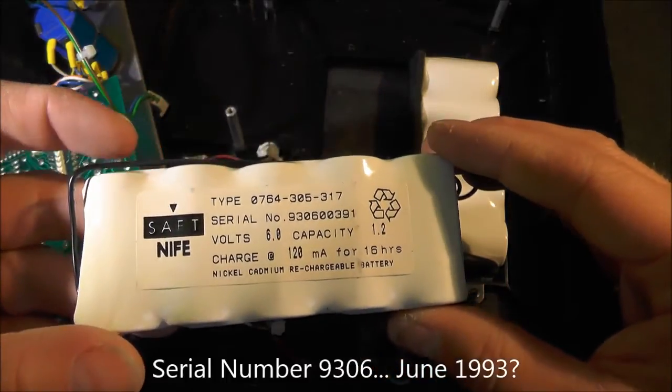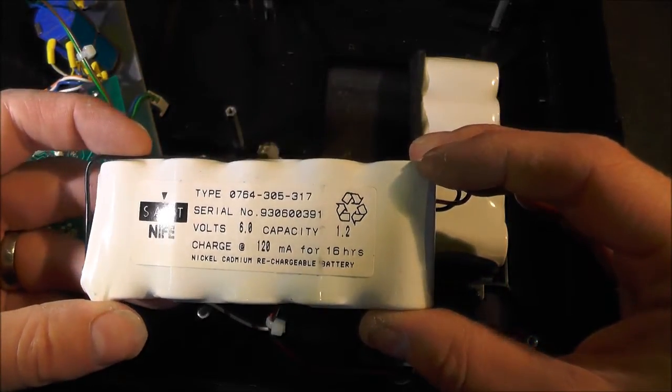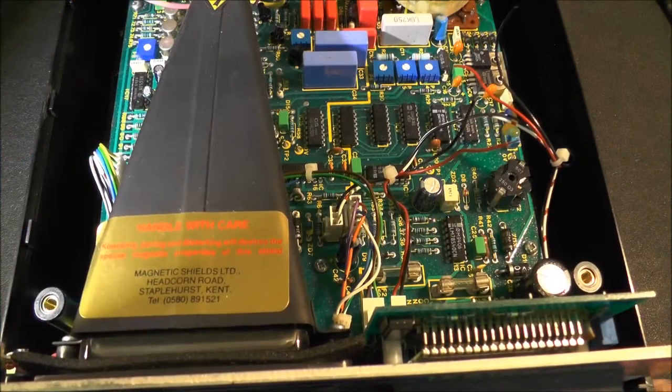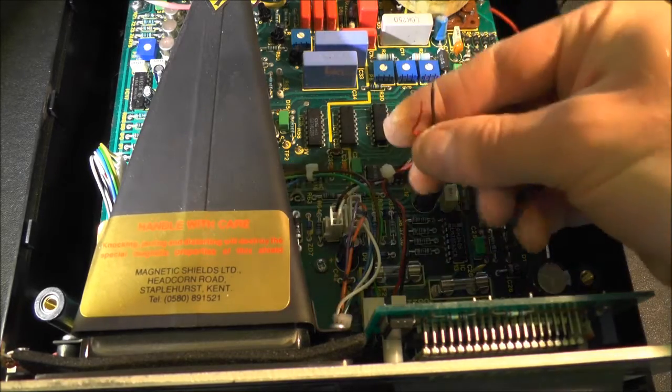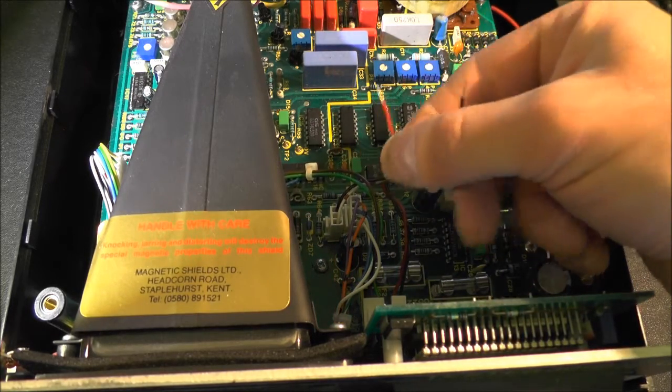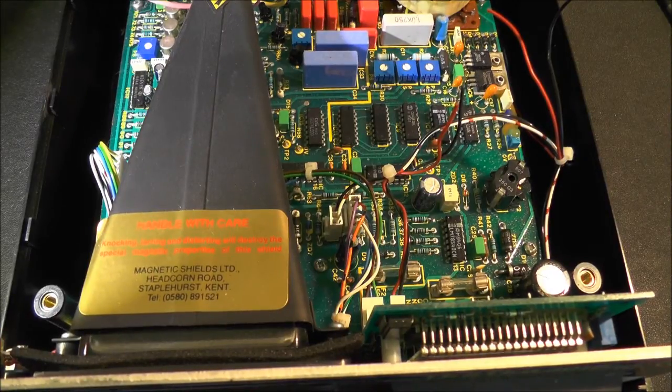I suspect these batteries are probably as old as the machine. To power this what I've done is I've cut the wires that would normally go to the battery packs and just put some connectors on here and run it from my power supply in battery mode.